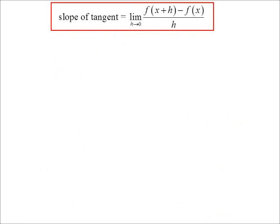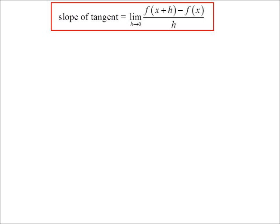So the slope of tangent will be exactly this, this is no longer an estimate. By using limits we'll find it exactly: function x plus h minus function x all over h. That's basically what we call the derivative of y with respect to x.